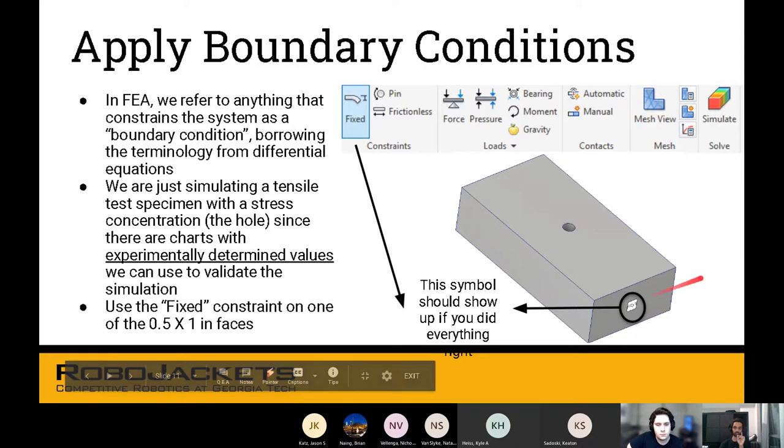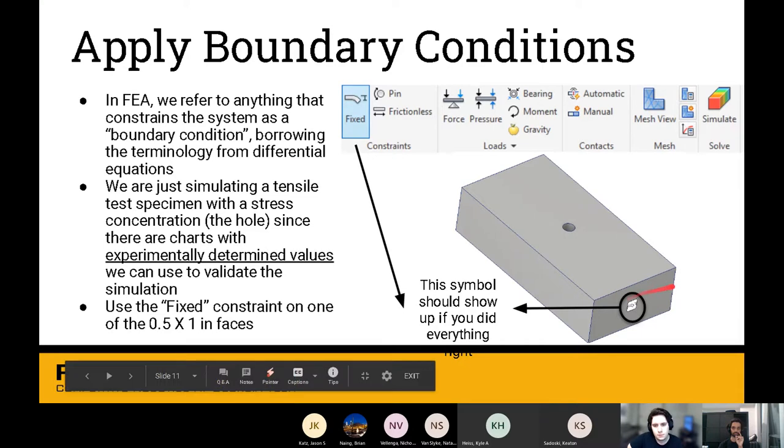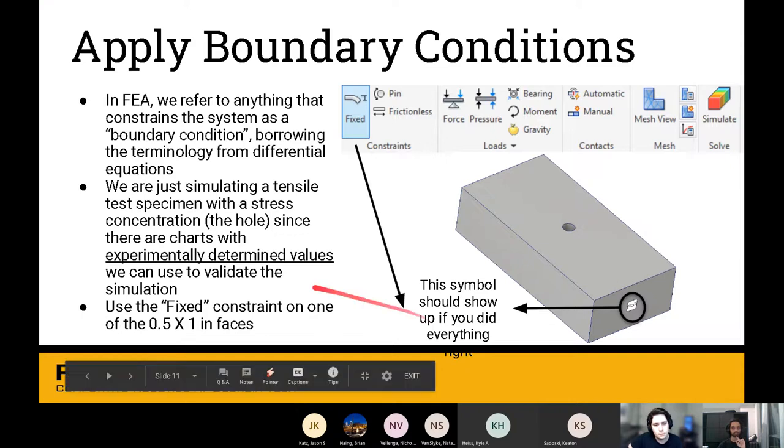FEA is about finding out what happens inside the part, right? Boundary conditions are the assumptions we make. This is stuff that happens on the outside of the part. We're doing a tensile test with stress concentration. We want to assume that this end of our block is fixed. What does fixed mean? This face, you apply the fixed constraint to this face. All elements on this face are going to have zero displacements and zero rotations. In three space, it can have possible displacements in the X, Y, and Z directions, and rotations around the same three axes. When you apply the fixed constraint, all those values are set to zero.